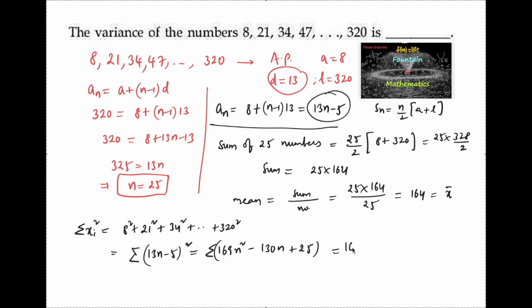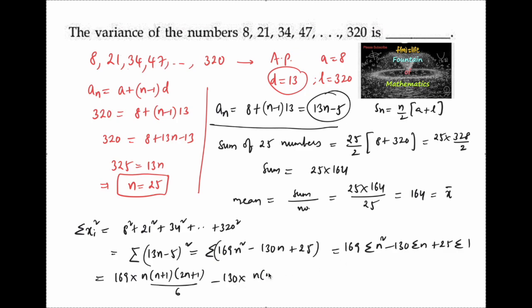Taking the summation: Σxᵢ² = 169·Σn² − 130·Σn + 25·Σ1. Using the standard formulas: Σn² = n(n+1)(2n+1)/6, Σn = n(n+1)/2, and Σ1 = n. Substituting n = 25 throughout.